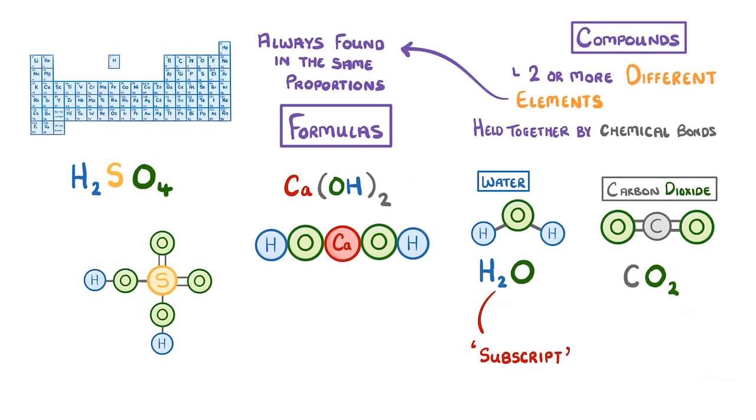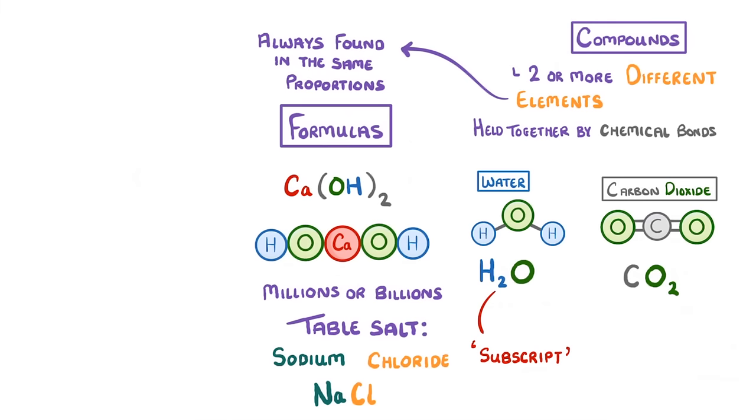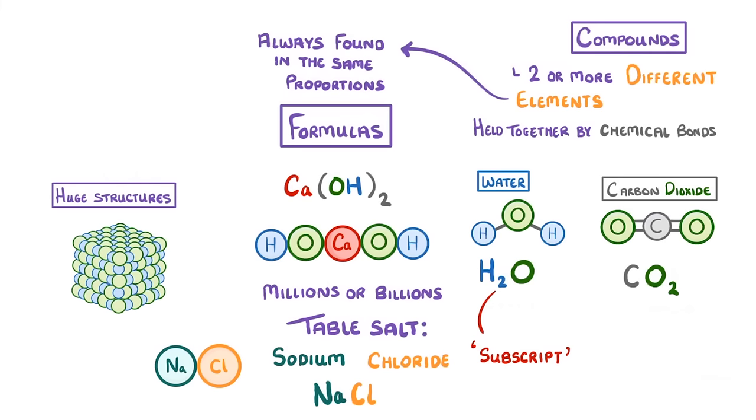The compounds we've seen so far have all been relatively small, containing just a few atoms. Some compounds, though, can contain millions or billions of atoms. For example, common table salt is actually a compound called sodium chloride, which has the formula NaCl. From the formula, you might think that it represents little molecules made of one sodium and one chlorine. But sodium chloride actually exists as huge structures, containing millions or billions of atoms.